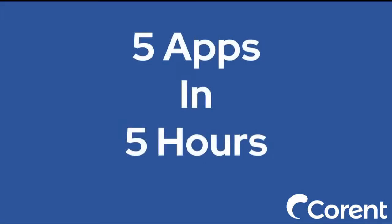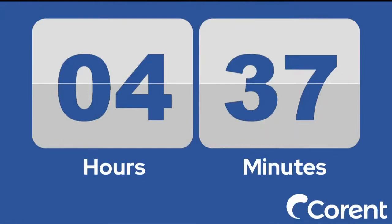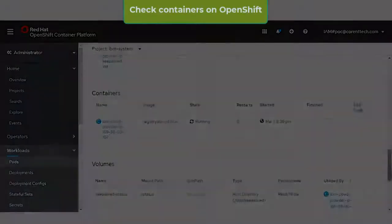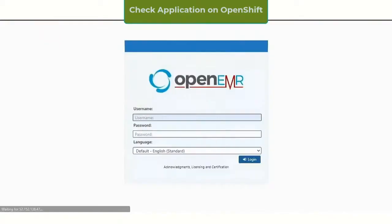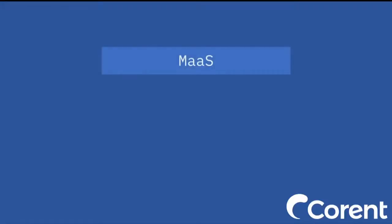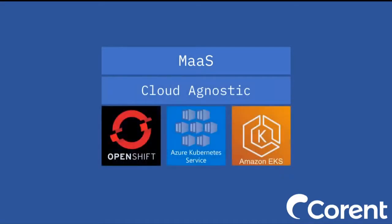With MAS, Sid migrated five apps in five hours — four hours and 37 minutes to be exact — including time for manual validation to ensure that the apps worked properly after the migration. And because MAS is built on a cloud-agnostic platform, any Kubernetes environment is possible, including AKS and EKS.